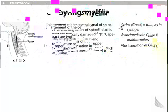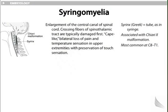Syringomyelia is an enlargement of the central canal of the spinal cord. The crossing fibers of the spinothalamic tract are typically damaged first — ascending fibers carrying pain and temperature. This results in a 'cape-like' bilateral loss of pain and temperature sensation in the upper extremities with preservation of touch sensation, which travels in the dorsal columns. 'Syrinx' in Greek refers to tube, as in syringe. Syringomyelia is associated with Chiari II malformation and is most common at C8 through T1.